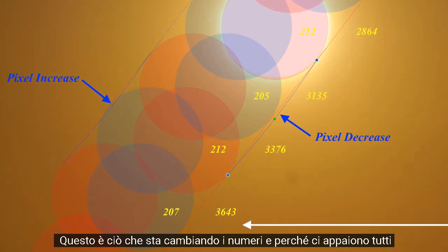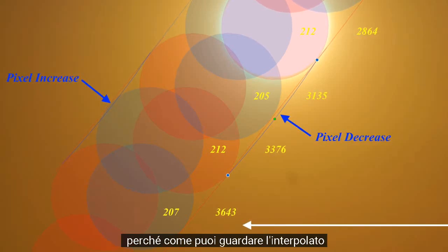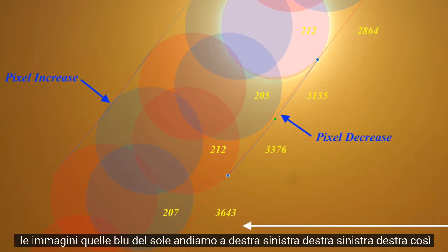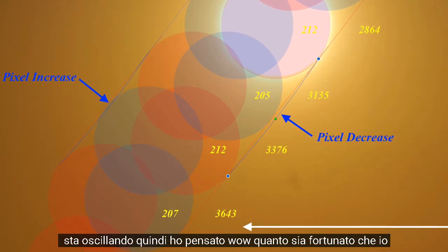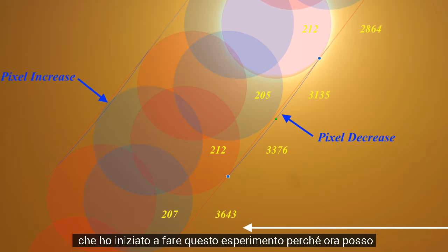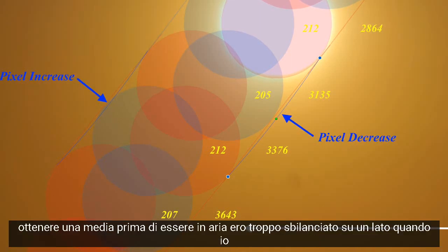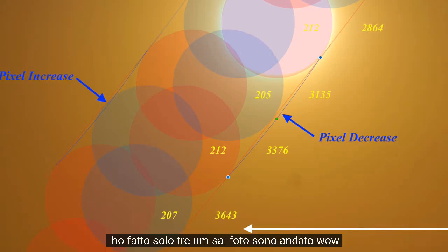The interpolated images of the Sun go right-left-right-left, so it's oscillating. How fortunate that I started doing this experiment this way — now I can get an average. Before, I was biased to one side when I did just three photos.